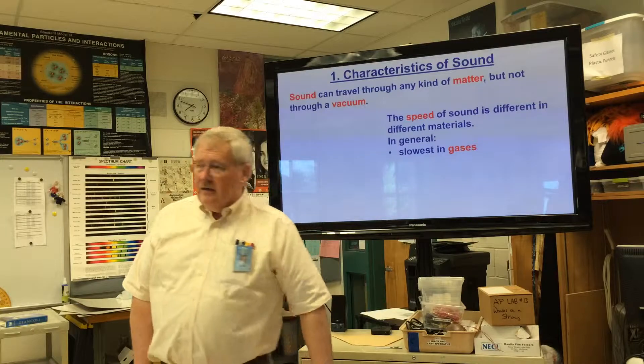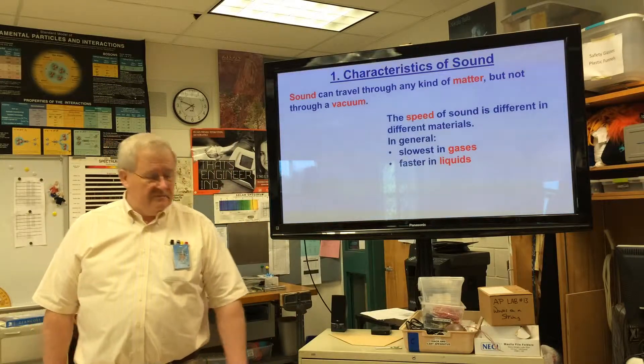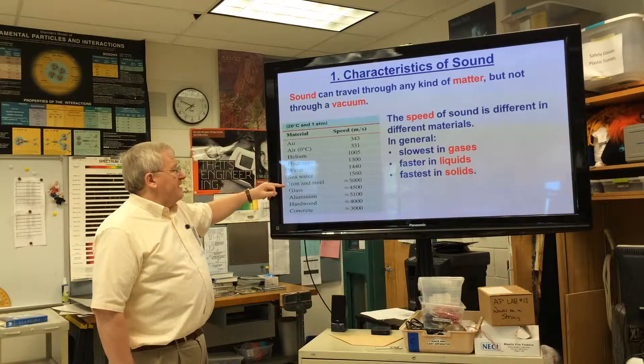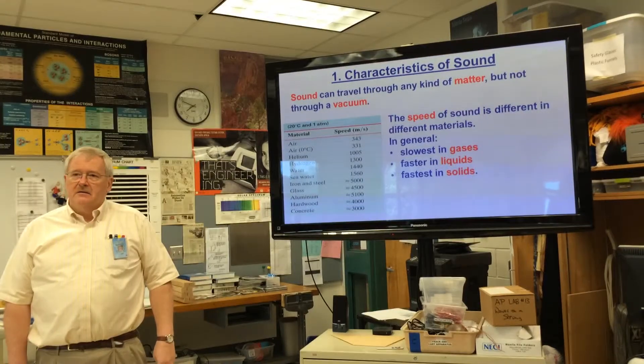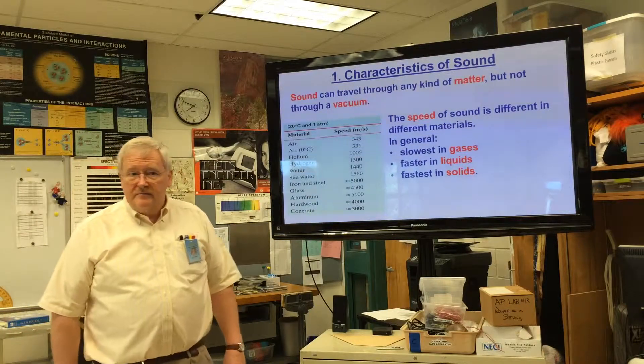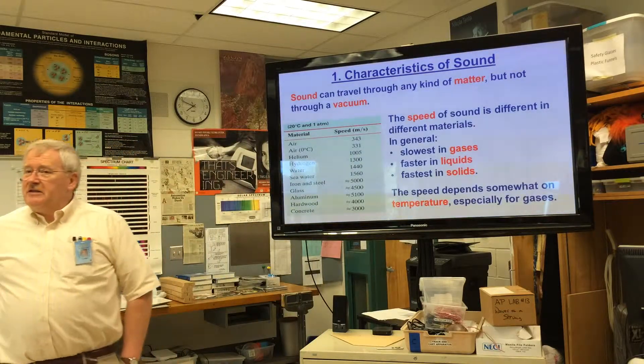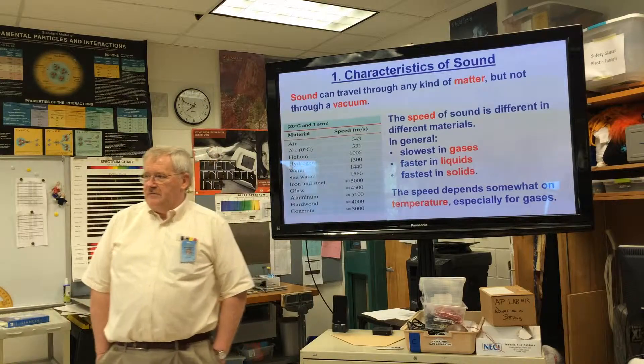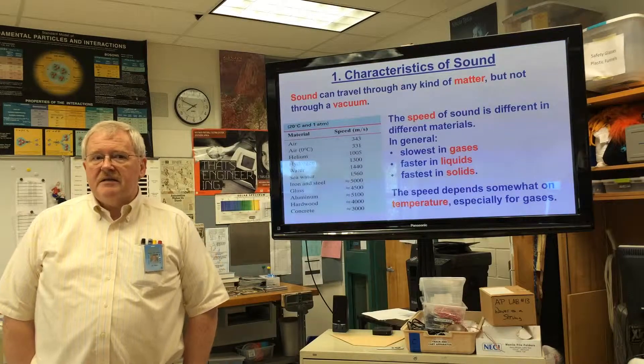In general, sound is slowest in gases, faster in liquids, and fastest in solids. Air: 343 meters per second. Iron and steel: 5000 meters per second, five kilometers per second, about three point something miles per second. That's pretty fast. The speed depends somewhat on temperature, especially for gases. The interesting thing is that it does not depend on pressure - only slightly on pressure. For all intents and purposes, the pressure is irrelevant, but it does depend on the temperature.